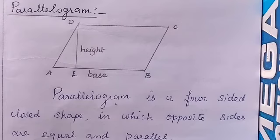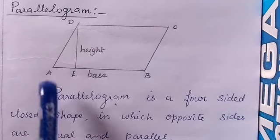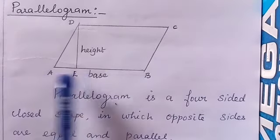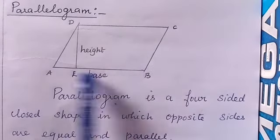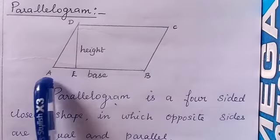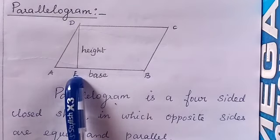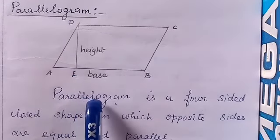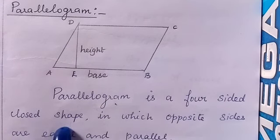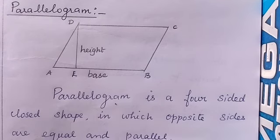The four-sided shapes we will cover are parallelogram, rhombus, and trapezium. First is the parallelogram — a four-sided closed shape ABCD, where AB is the base and DE is the height. The definition: a shape in which opposite sides are equal and parallel.